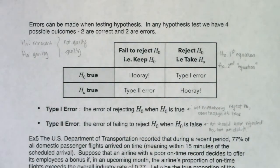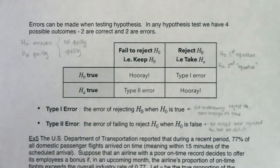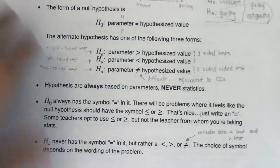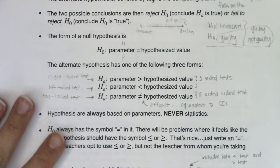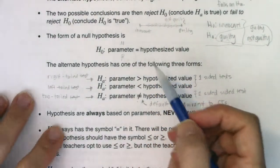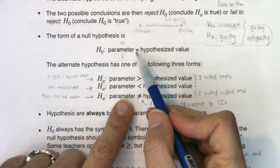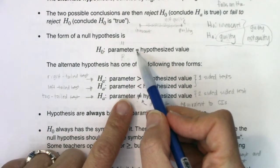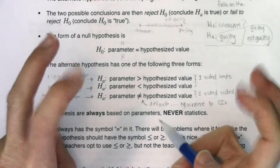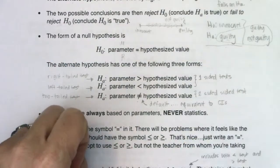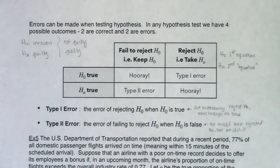The reason I put 'equation' in quotes has to do with being a math nerd: technically in math something's not an equation unless it has an equal sign, and the alternate never has the equal sign. That's why I call it a quote equation. So H naught is the first equation, H_A is the second equation.